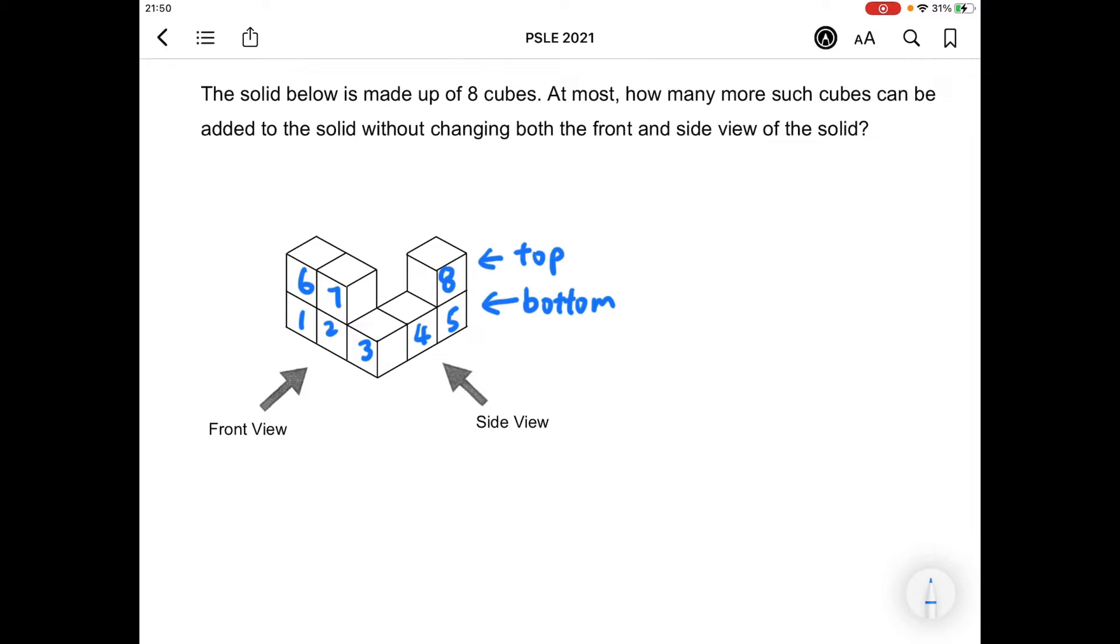It's clearer if we were to draw the front view and side view of this solid. For the front view there should be three squares at the bottom layer as well as three squares at the top layer.